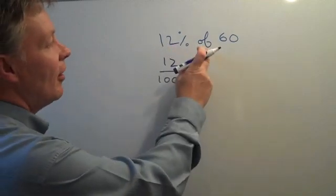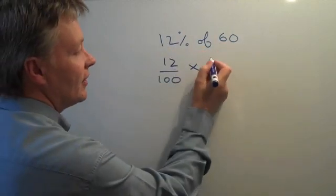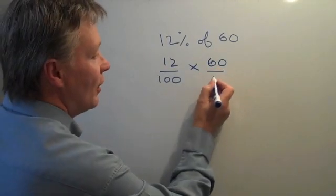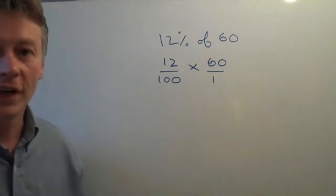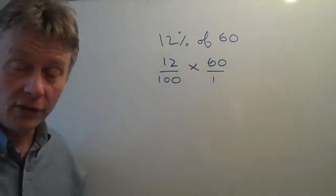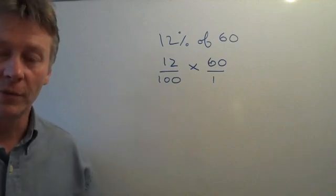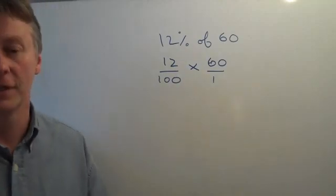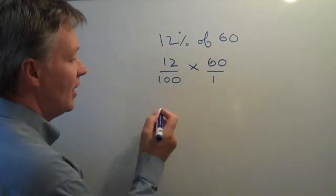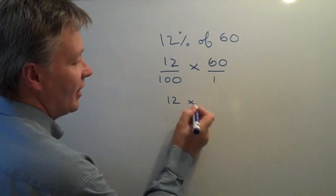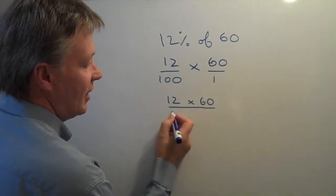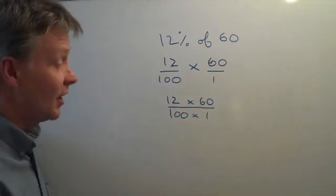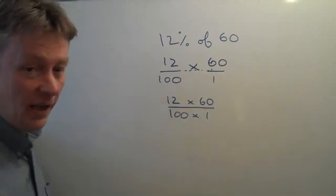So I'm writing 12% of 60. The way I'm going to write it is as 60 divided by 1, because I want to use fractions to calculate the percentage by reducing the fraction to make it easier to manipulate. So if I rewrite it, I could write it as 12 times 60, divided by 100 times 1. All I've really done is extended the fraction line across.